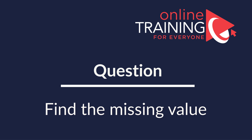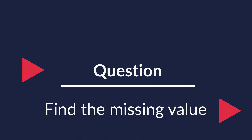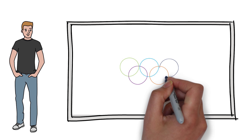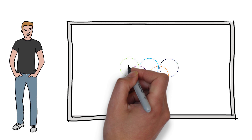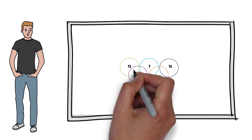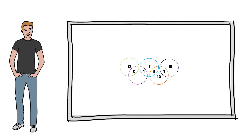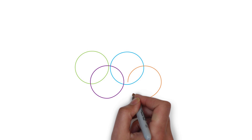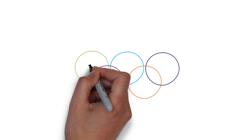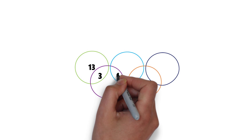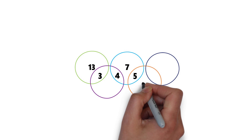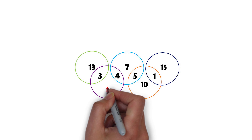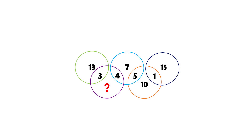This is one of my favorite questions because it is very frequently used on the test. You are presented with five crossing circles, all different colors, with numbers inside the circles as well as numbers at the intersections. The numbers you see are 13, 3, 4, 7, 5, 10, 1, and 15. There is also one number missing, highlighted with a question mark.